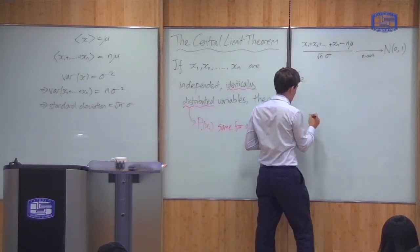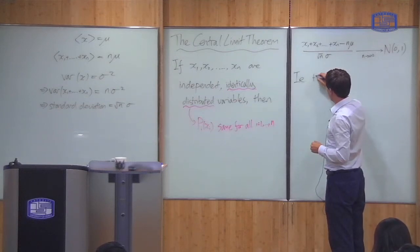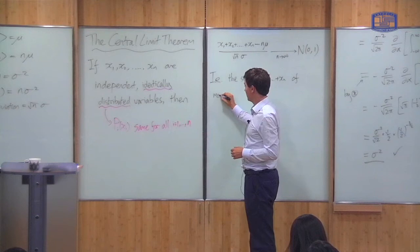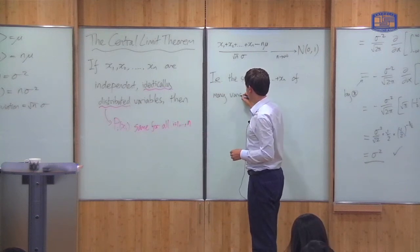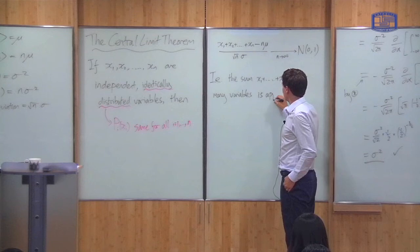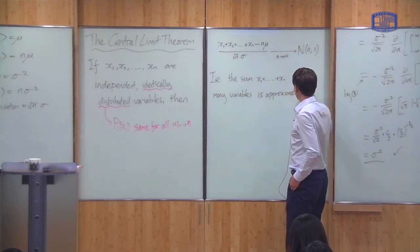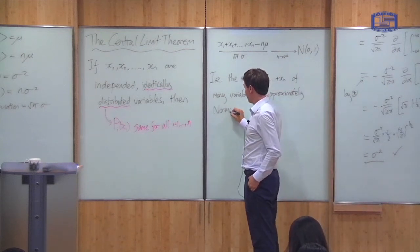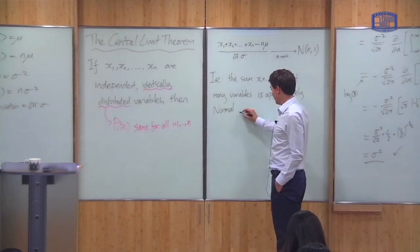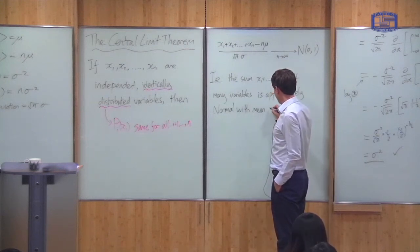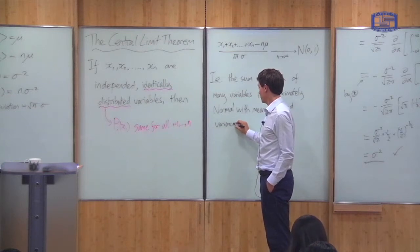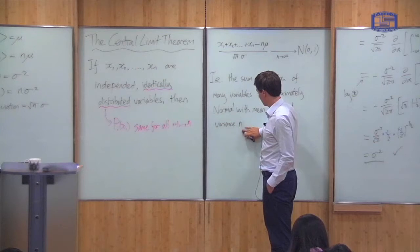But why is this important for us? This means that the sum x1 up to xn of many variables which are identically distributed and independent is approximately normal, with mean equal to n times mu and variance equal to n times sigma squared.